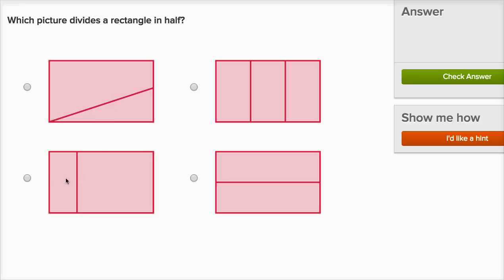This one is also divided into two sections, but they're not equal — this one is much bigger than this one. And this is divided into equal sections, but it's not two equal sections; this is divided into three equal sections. So this isn't divided in half either.